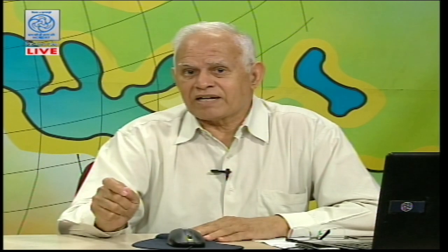I have explained Type 1 error. In this Type 1 error, you have understood that although the value is not significant — meaning the null hypothesis should not have been rejected — the researcher decides to reject it. When doing that, he is increasing the error and therefore lowering the level of significance.